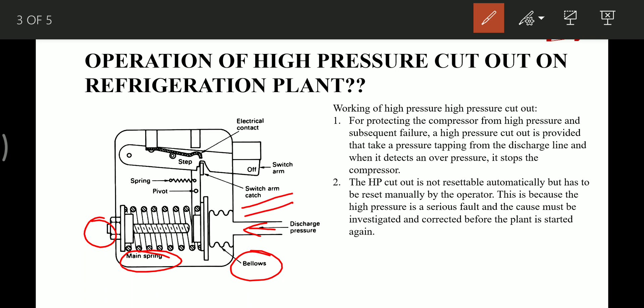The arm catch actually keeps this switch arm in place to keep this electrical contact in contact with this contactor. Then we have this spring which keeps this arm catch in place, and this is the pivot point about which this arm catch rotates. Now let's see how it works.